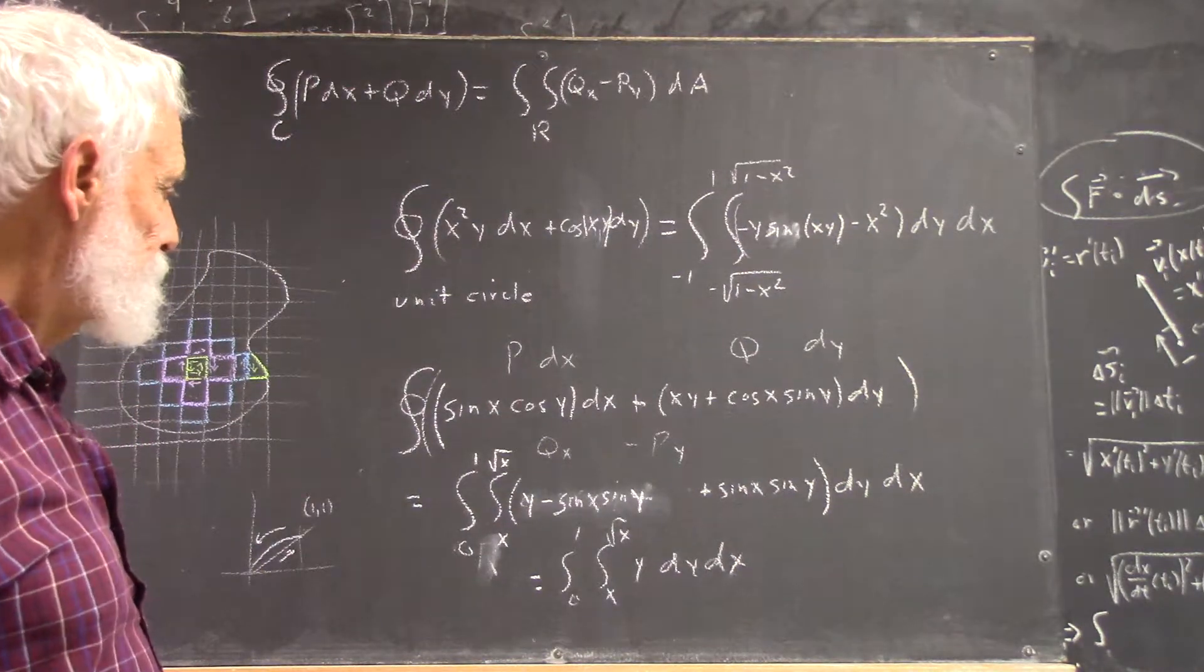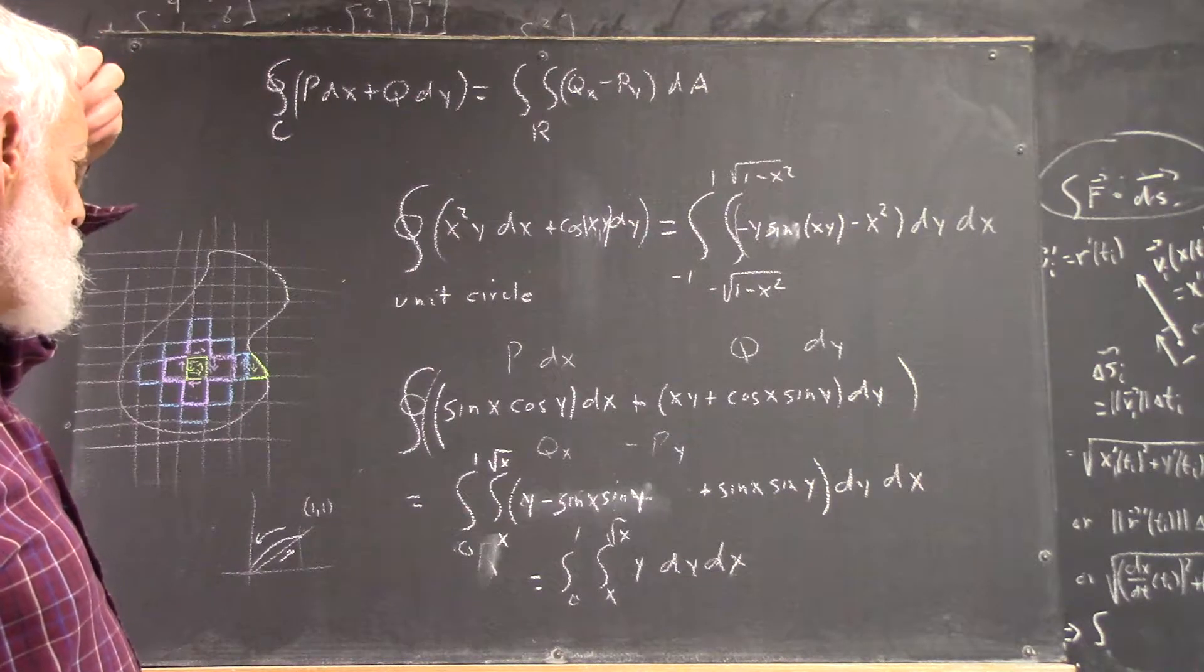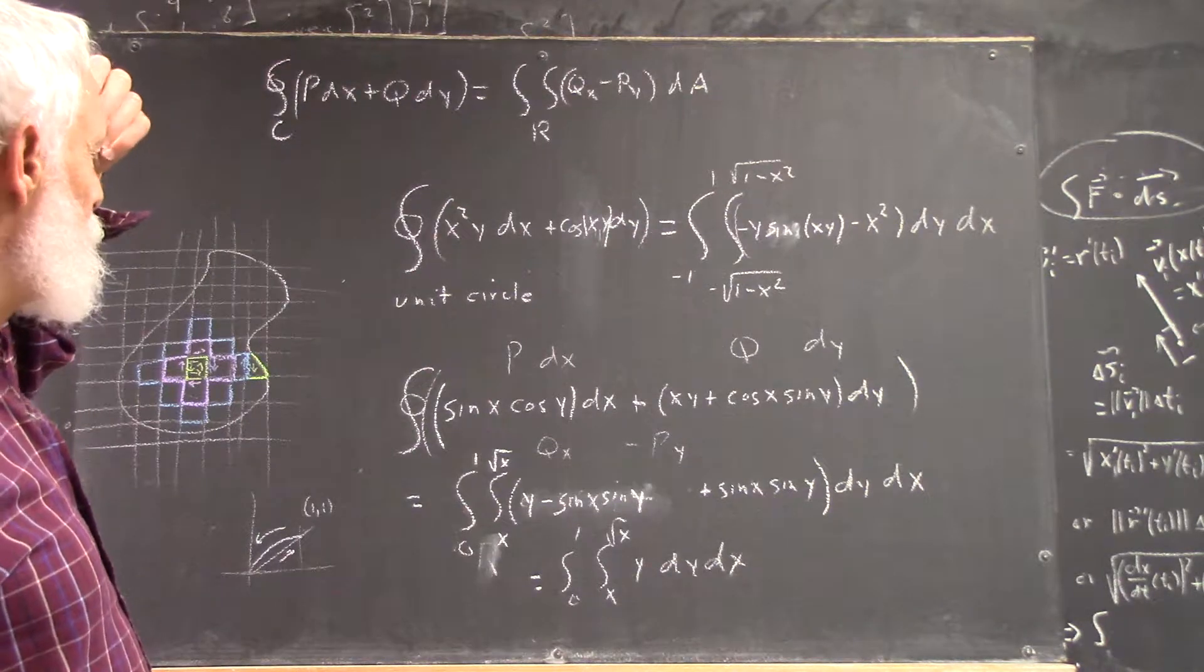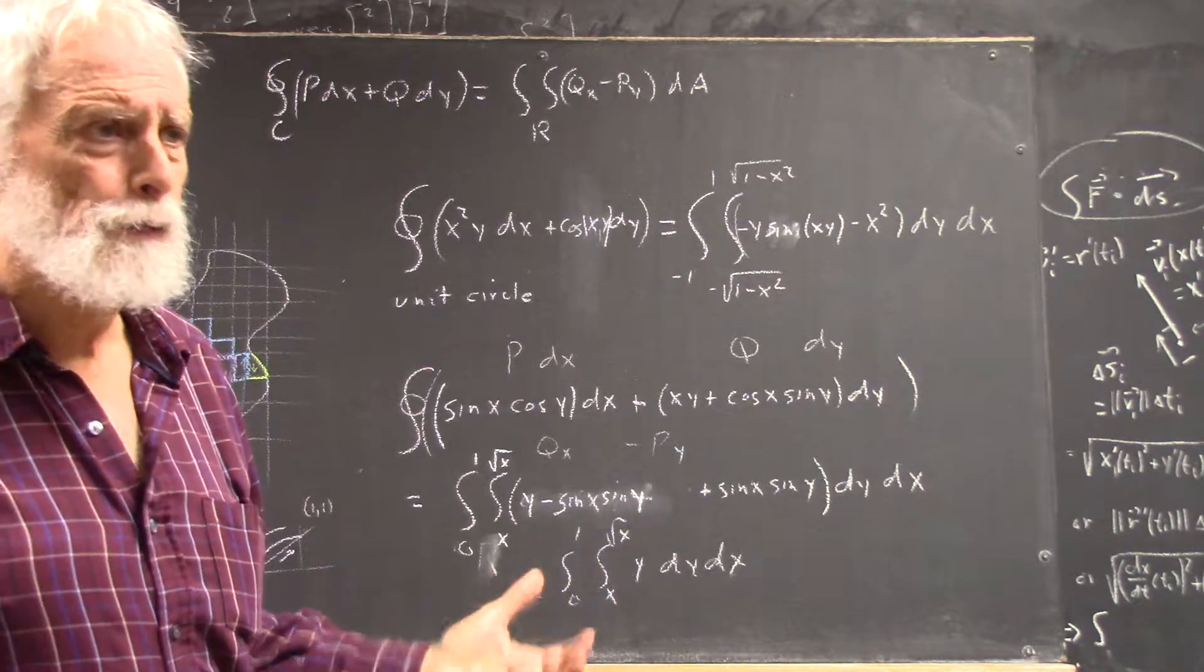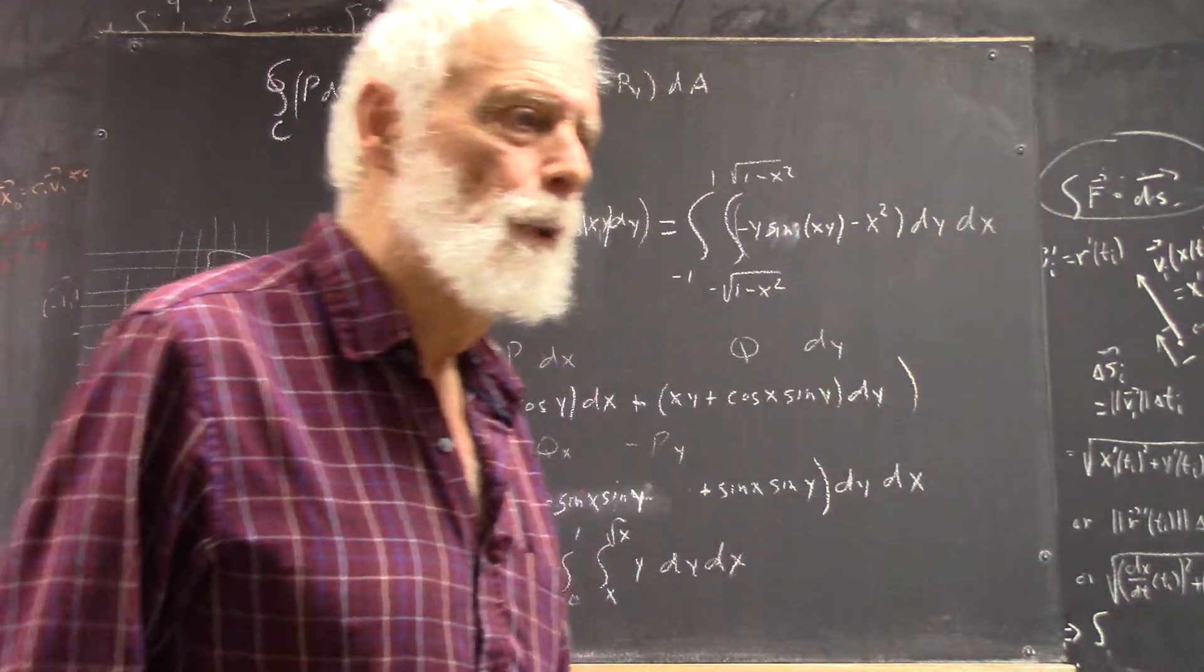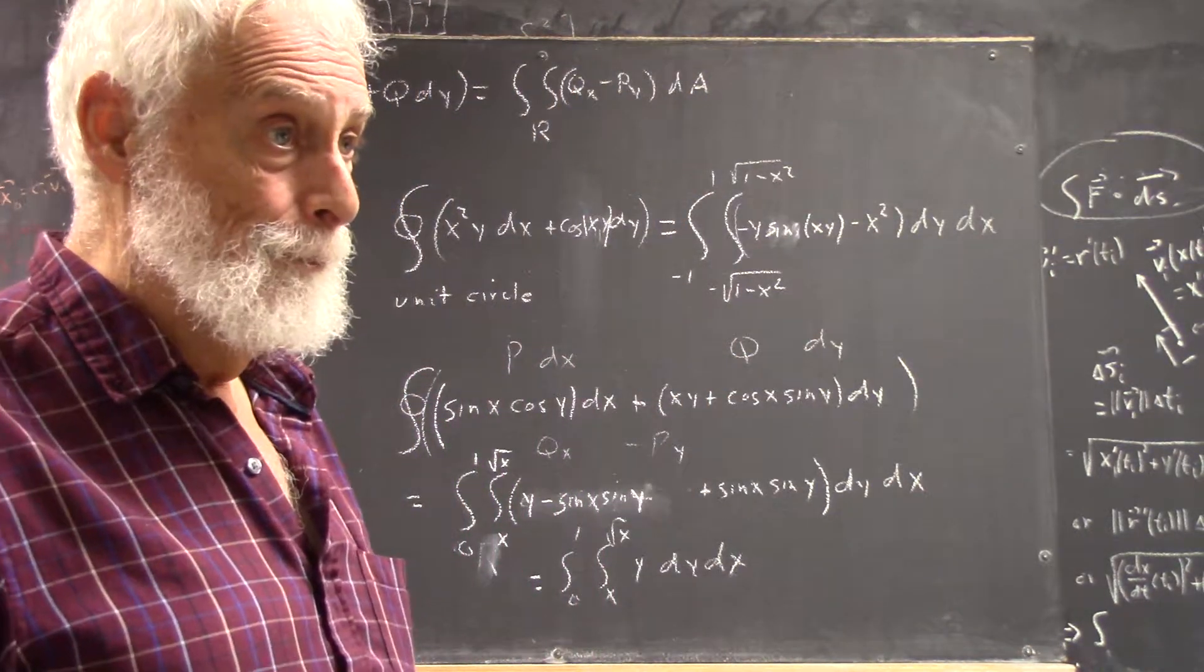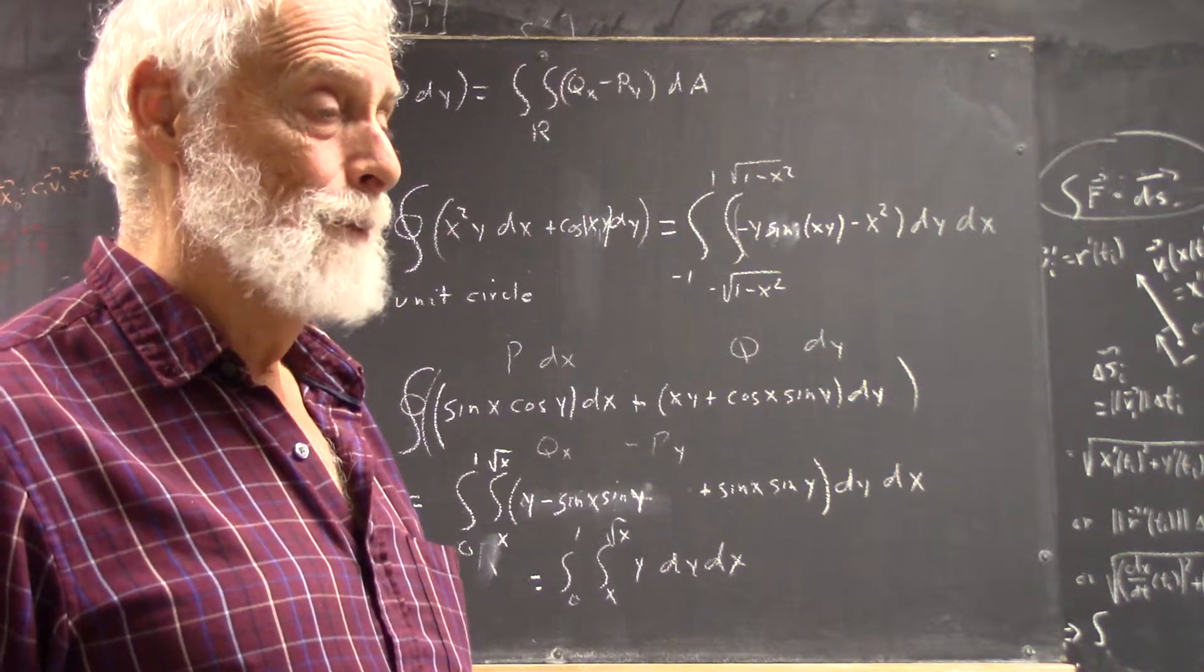And then you'd end up with sines and or cosines of square root of t if you used x equals t for parameterization. Which would be painful.